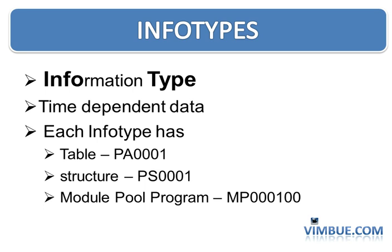So for infotype 1, the table will be PA0001 — 'PA' would be the start of all infotype table names. If you want to see how the table looks, you follow the same convention: go to SE11 and enter PA0001 to see the actual table. Similarly for the structure, you would go to SE11 and look for PS0001.